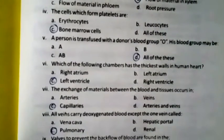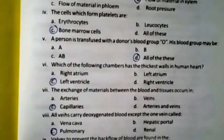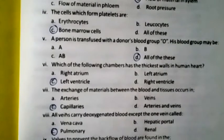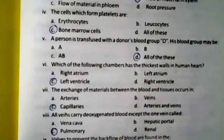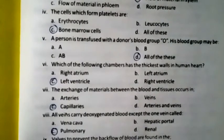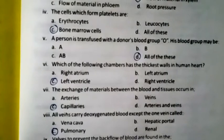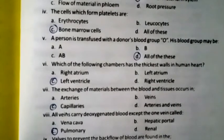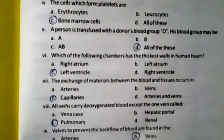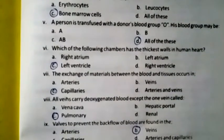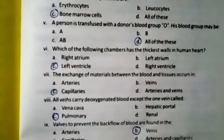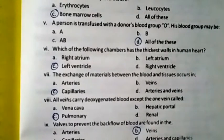Question eight: All veins carry deoxygenated blood except one vein called — vena cava, hepatic portal, pulmonary, or renal. The right option is pulmonary. Valves to prevent the backflow of blood are found in arteries, veins, capillaries, or arteries and capillaries. The right option is veins.